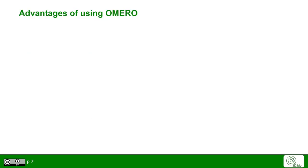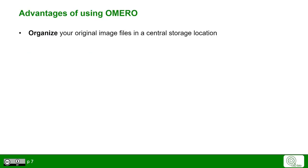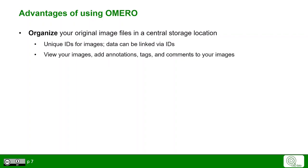What are the advantages of using Omero? In Omero, you can organize your original image files in a central, secure storage location. Images have unique IDs, and those IDs can be used to link to data. You can view your images, add annotations, tags, and comments to your images.